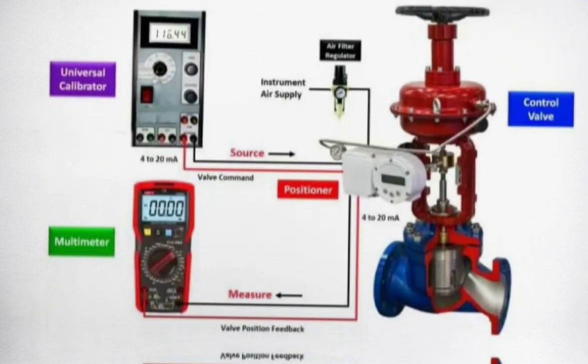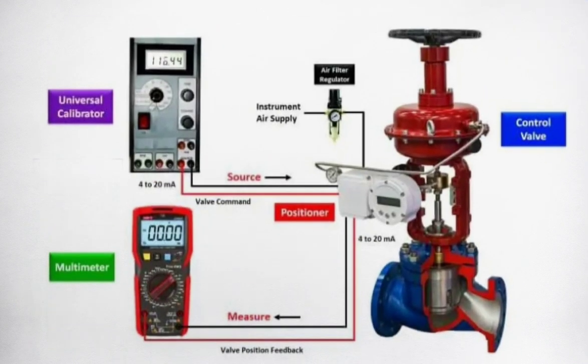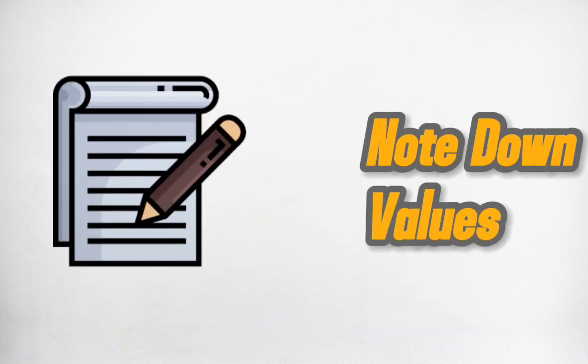If there is no facility to give input from the control room, connect the HART communicator, MaSource, or BEAMEX to the control valve to give commands from the field directly. Note down values as shown in the table.